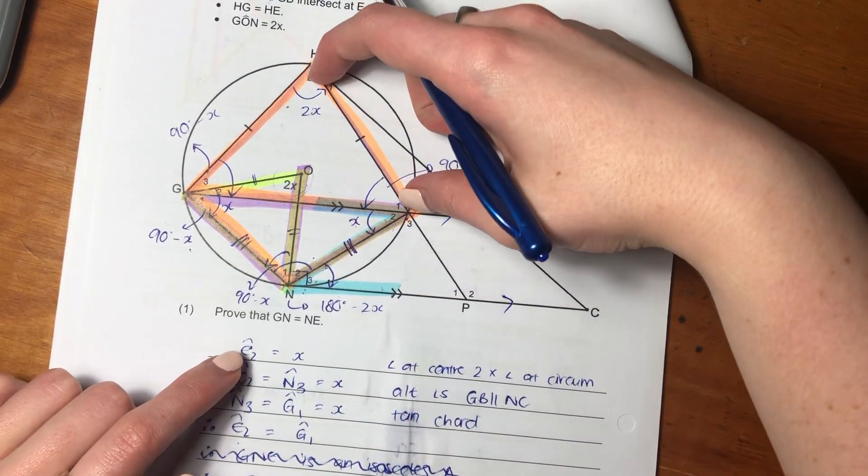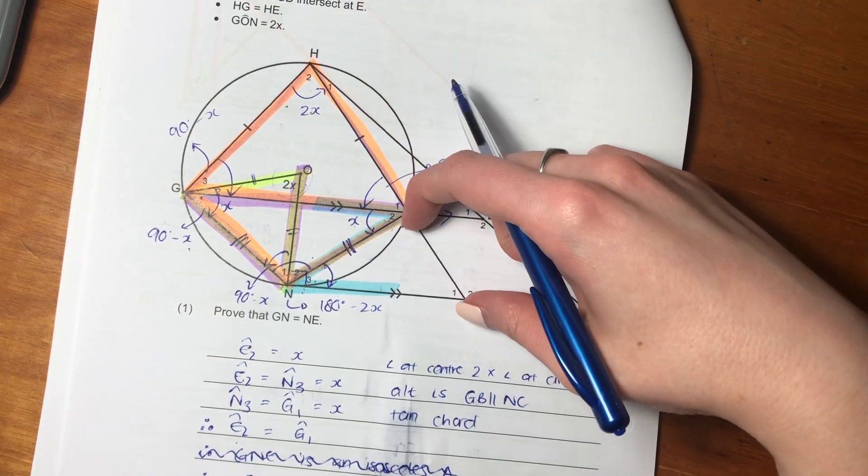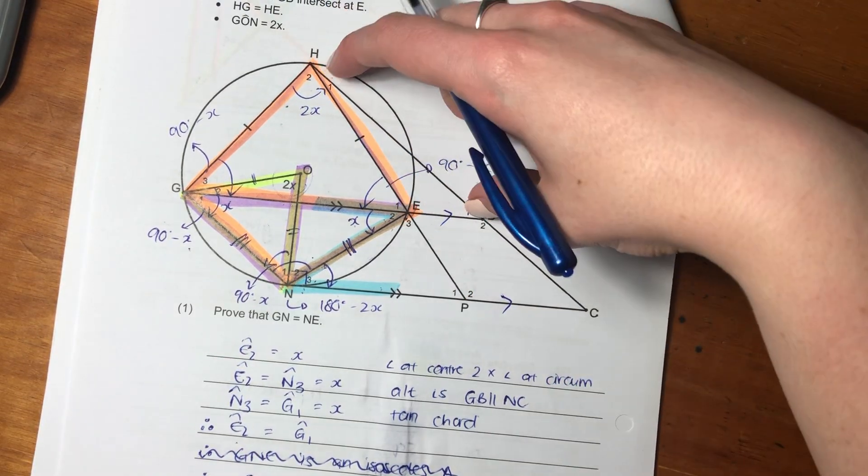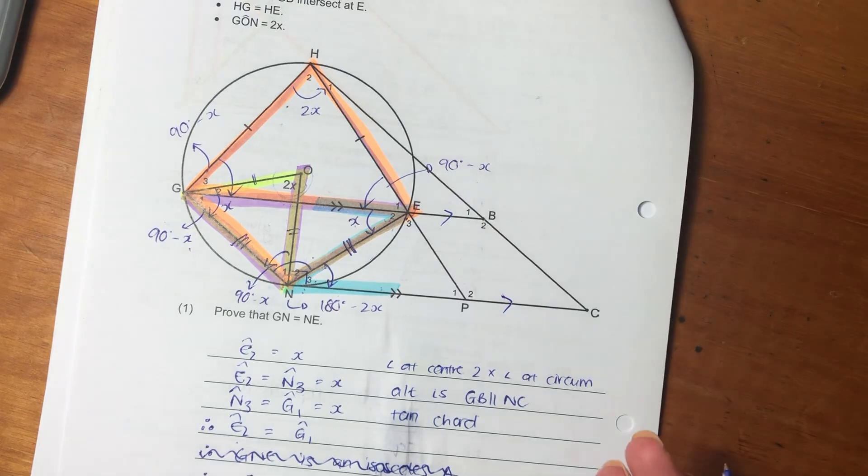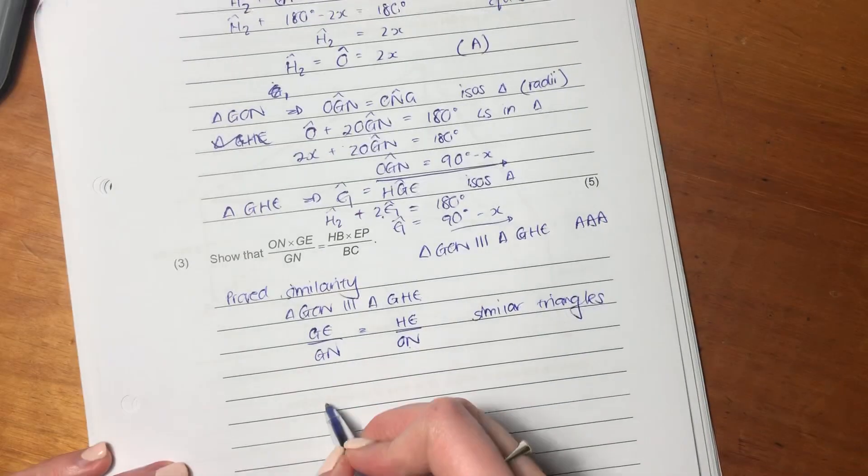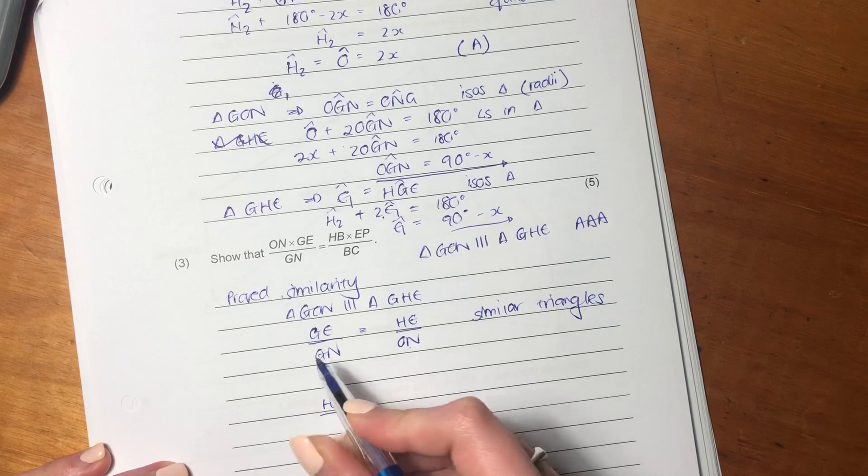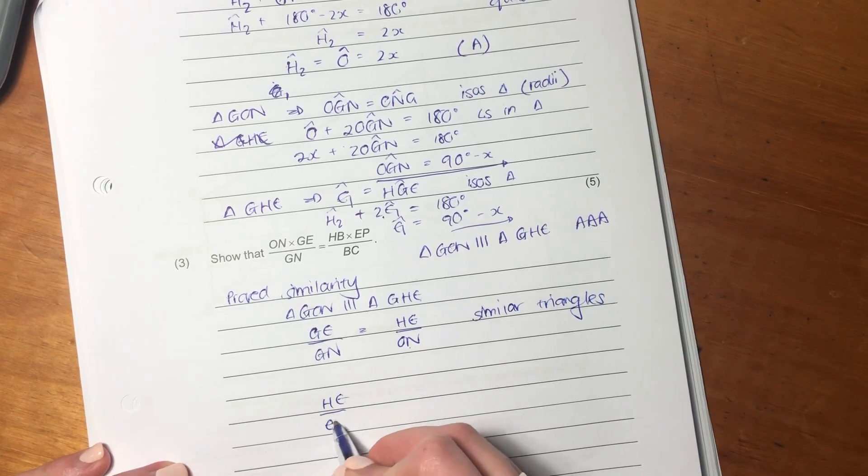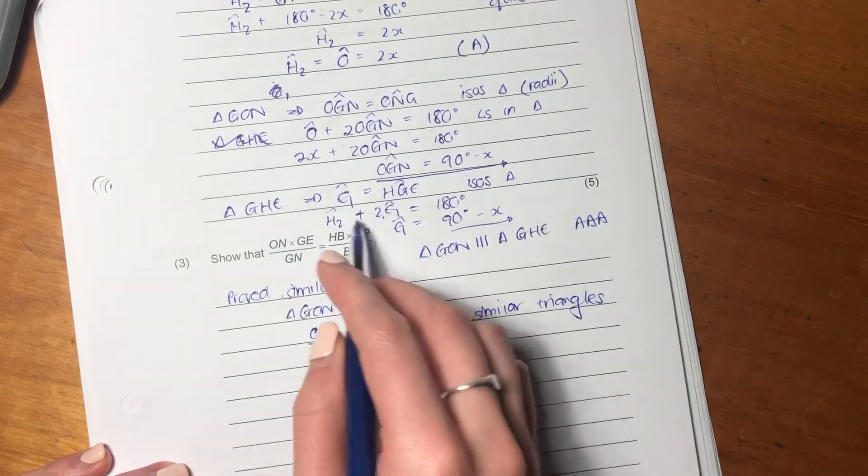So we know that H-E over E-P is going to be the same as H-B over B-C because of proportionality. So let's write that out and see whether we can do a little bit of manipulation to see whether we can get to our end point of this.